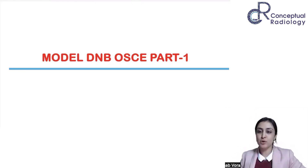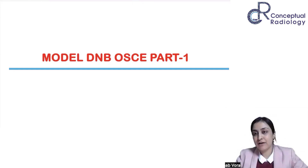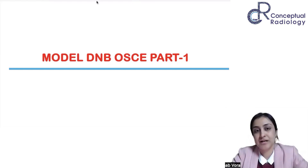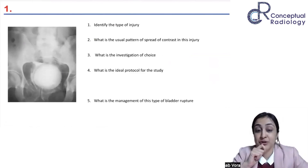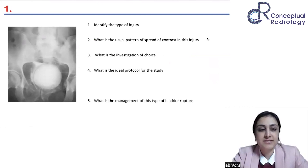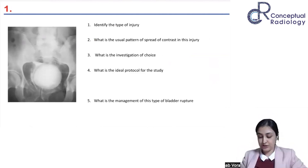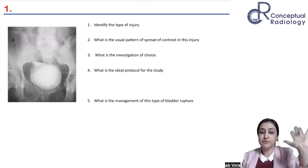I have 15 OSCEs today — each will have an image followed by related questions. The OSCEs include both theory, table viva stuff, and cases. This is the first OSCE; there are five questions. There's no specified marking, but I want to discuss all five. Look at the image and tell me: what type of injury is this?